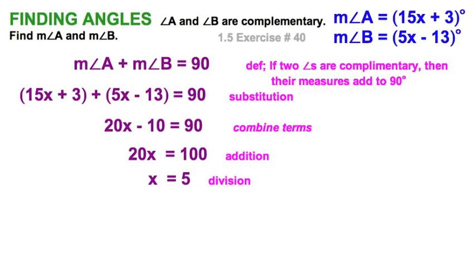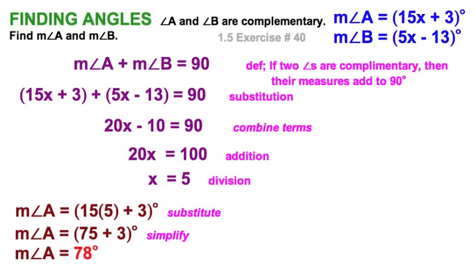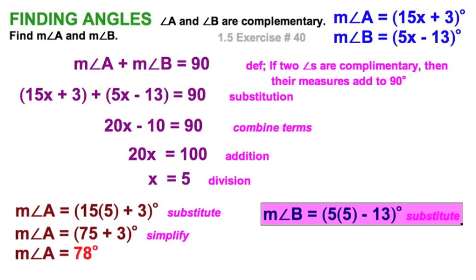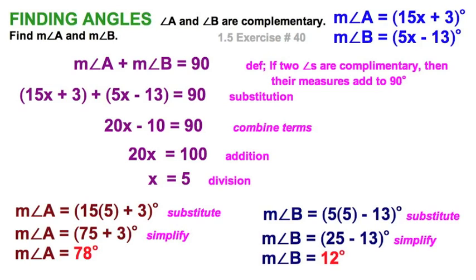Again, we've solved for the variable x. Let's perform our substitution for the measure of angle a. And then we'll simplify. I see there we have 78 degrees. For angle b, perform a similar substitution. And we solve this one. I see 12 degrees. One last mental check: 78 plus 12 equals 90. So it looks like we've got this one done.